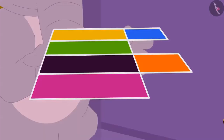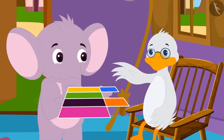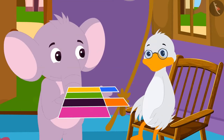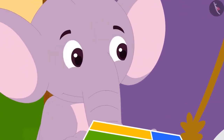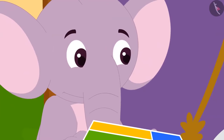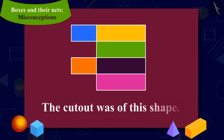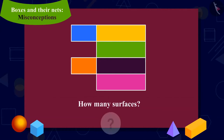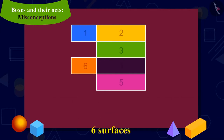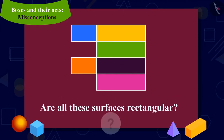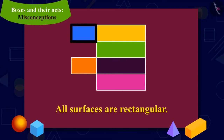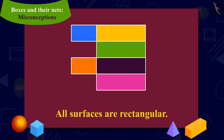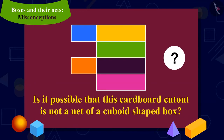When the uncle asked him the reason for his sudden visit, Appu told him that he bought cutouts of some cuboid-shaped boxes. But now, despite his efforts, he was not able to make boxes from them. Uncle took that cardboard cutout from Appu. The cutout was of a shape like this. Kids, how many surfaces do you see in this cutout? Six surfaces. Are all these surfaces rectangular? Yes, all surfaces are rectangular. Then, can it be possible that this cardboard cutout is not a net of a cuboid-shaped box?